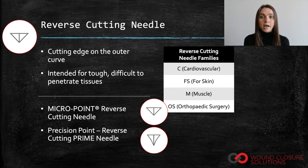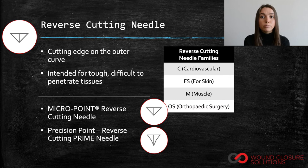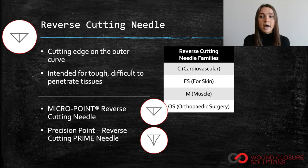Reverse cutting micro point surgical needles have reverse cutting tips, but the micro point needle design allows for incredibly smooth tissue passage. These needles are extremely sharp and are a great option for ophthalmic surgery. Precision point reverse cutting prime needles have reverse cutting tips and prime geometry for increased sharpness and control.